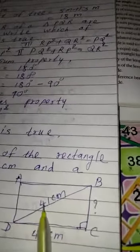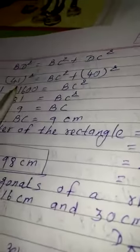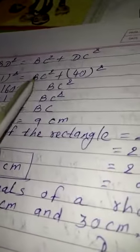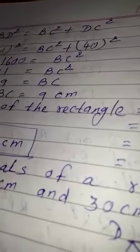If I use Pythagoras property, then we can say triangle B, C, D. Then C is our right angle. So, BD square is equal to BC square plus DC square. 41 cm square is equal to BC square plus 40 square. Change its side.